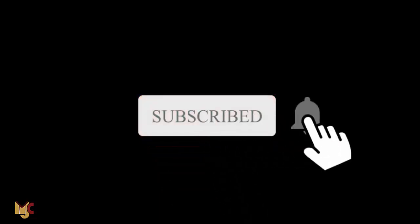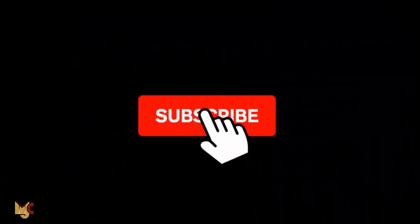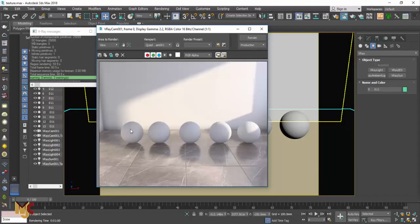Hi guys, this is Maduba John from MJC Designs. Today's tutorial we're going to look at how to create different V-Ray materials such as stainless steel, gold, frosted glass, clear glass, and high reflective glass. By the end of this video we should be able to learn how to create these materials. If you're new here please kindly subscribe to our channel so you don't miss videos like this. Now let's get started.